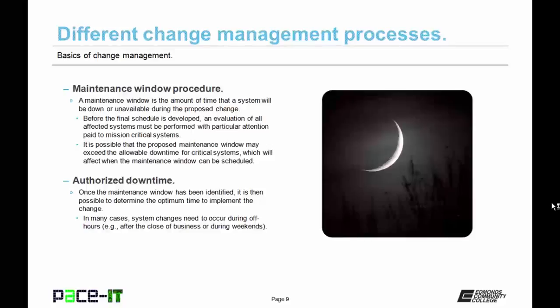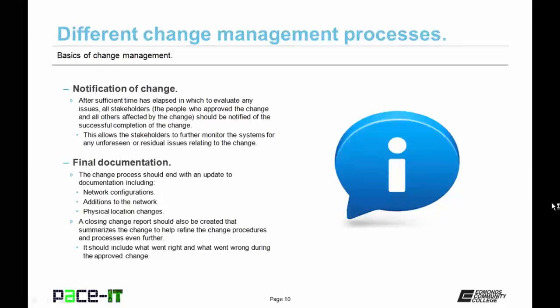A sub-procedure to the maintenance window procedure is authorized downtime. Once a maintenance window has been identified, it is then possible to determine the optimum time to implement the change. In many cases, system changes need to occur during off hours — after the close of business or during weekends — when systems are not utilized as much. Then there's the notification of change procedure.